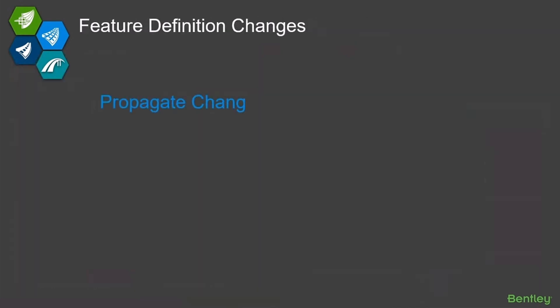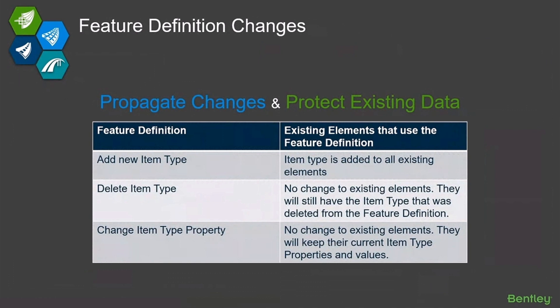As you start putting item types on feature definitions, it's important to understand how propagation and data is protected. If, after you have some production data, you go back and add another item type to a feature definition, what happens to all your existing data?